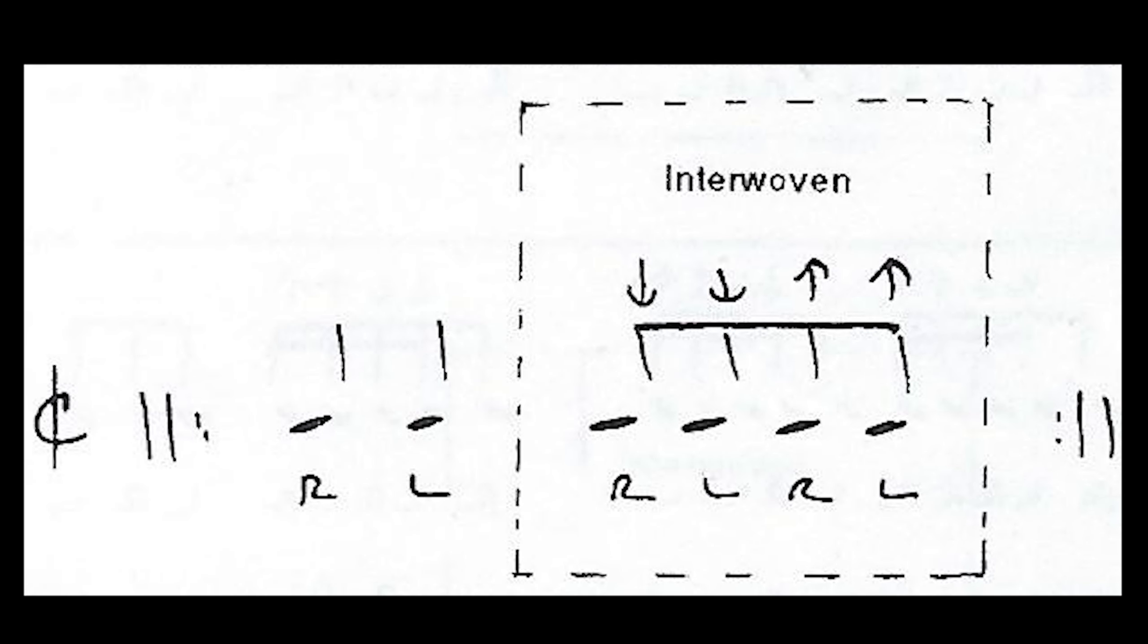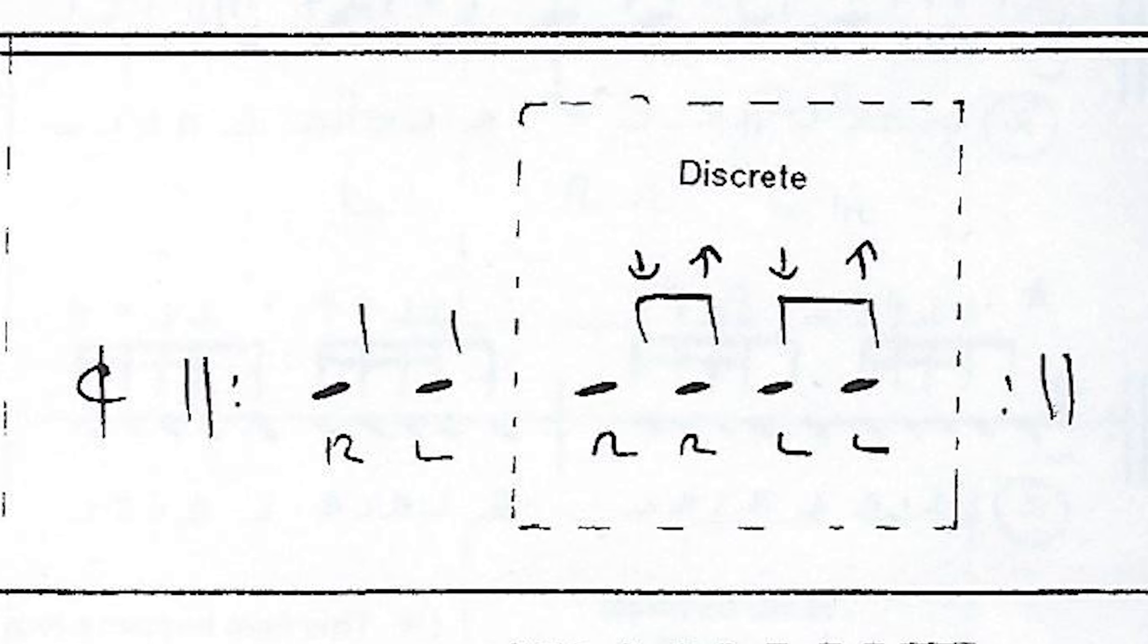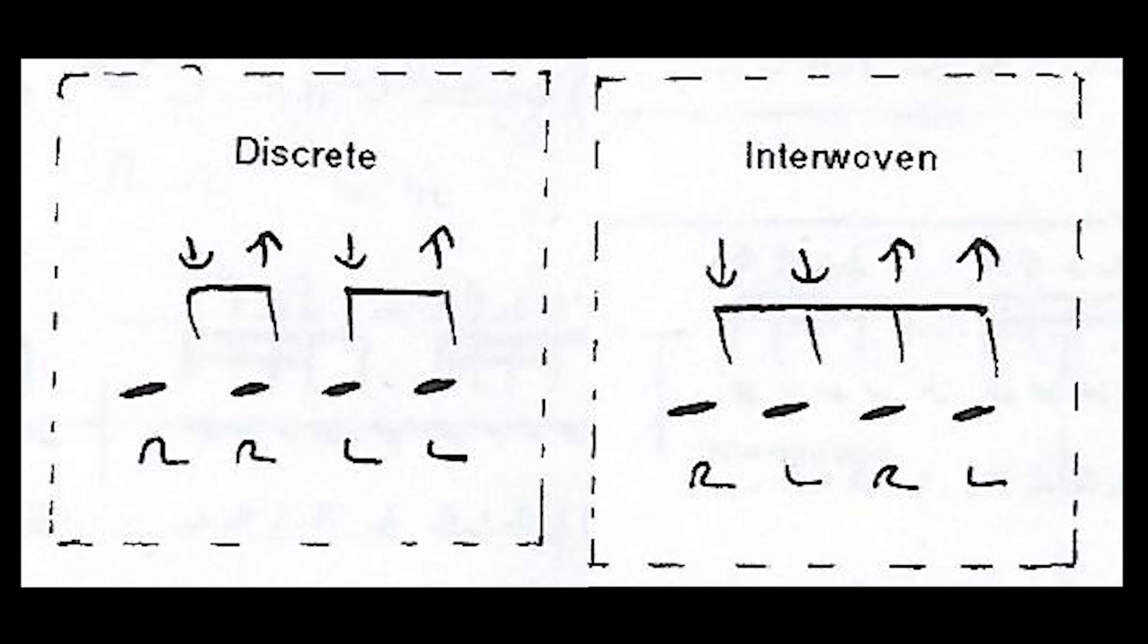The single six resembles the six-stroke roll but notice how the open close mechanics is changed from discrete doubles to interwoven where one hand is chasing the other. Here's the six-stroke roll interwoven as written in slow motion notation.